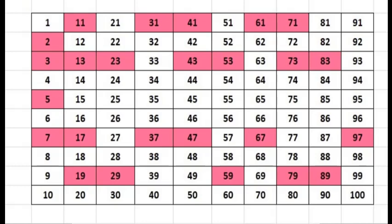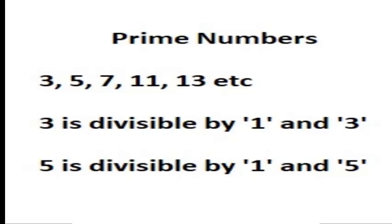Prime numbers are any number that are divisible by 1 and also by itself. For example, 3 is a prime number, 3 is divisible by 1 and also 3 is divisible by 3 itself. 5 is a prime number, 5 is divisible by 1 and also 5 is divisible by 5. 7 is a prime number, 7 is divisible by 1 and also by itself.